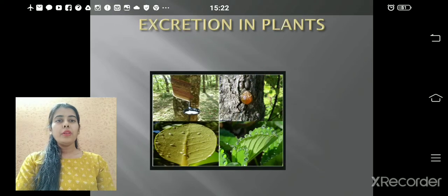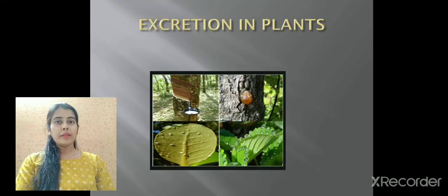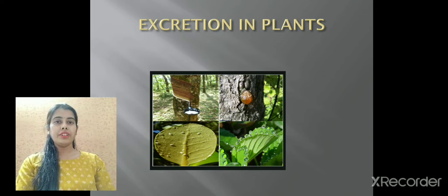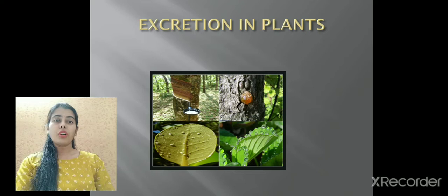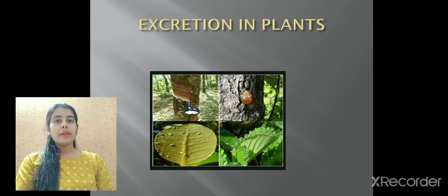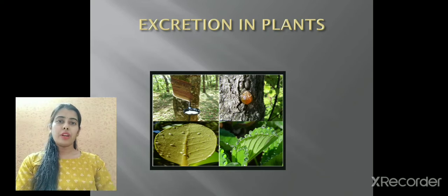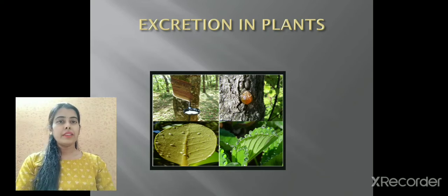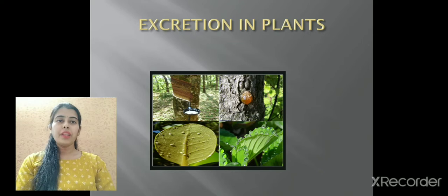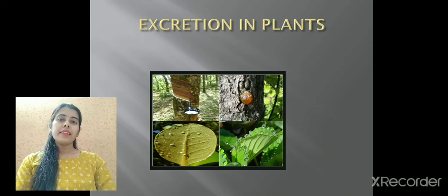In human beings we have a well-developed system, but plants also have various excretory products. They excrete excess water in the form of water vapor through transpiration. In many plants there are different types of excretory products like lac, resin, latex, gum, and rubber. All these are excretory products in plants.